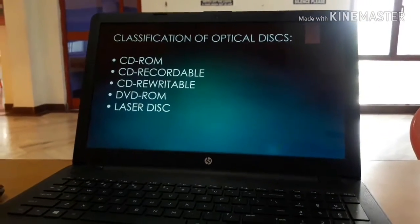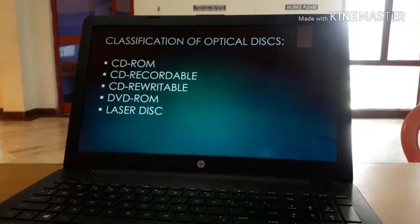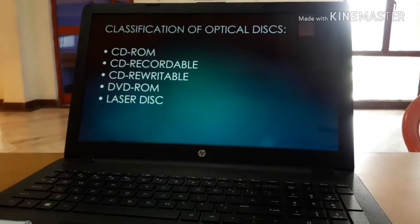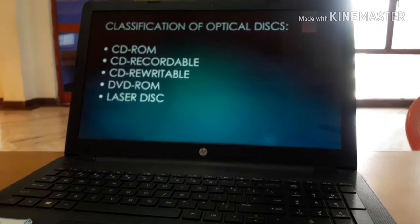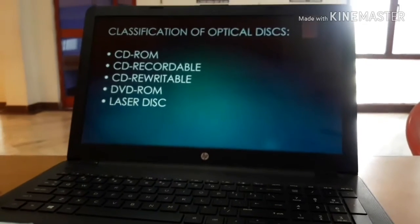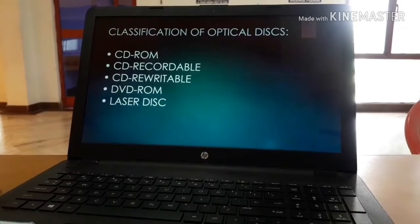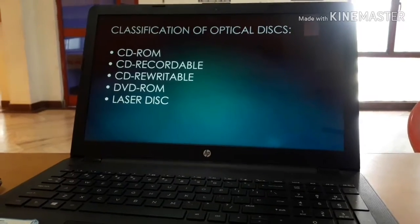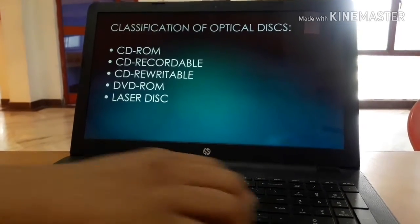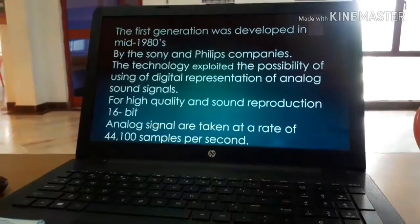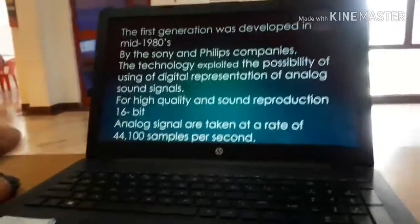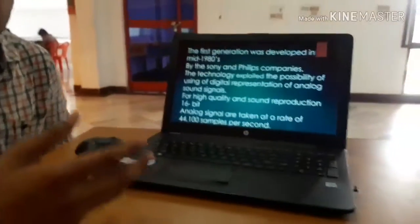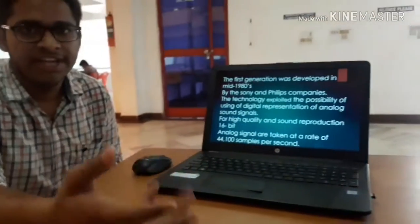Optical disks are classified into basically five types: CD-ROM, CD-Recordable, CD-Rewritable, DVD-ROM, and laser disk. The first generation came into use in the 1980s.